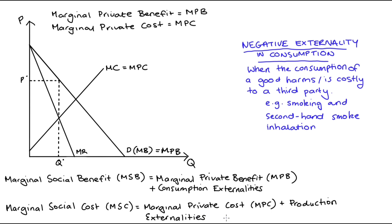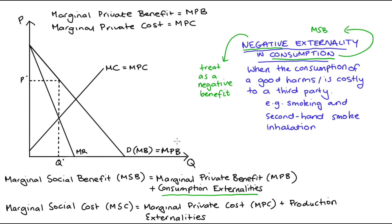The marginal social cost covers not just the costs to the producer — that's marginal private cost — but also any externalities from production. Because our externality is associated with consumption, we include it in the marginal social benefit function. Since this externality is negative, I treat it as a negative benefit, and it follows that our marginal social benefit curve lies below our demand curve.